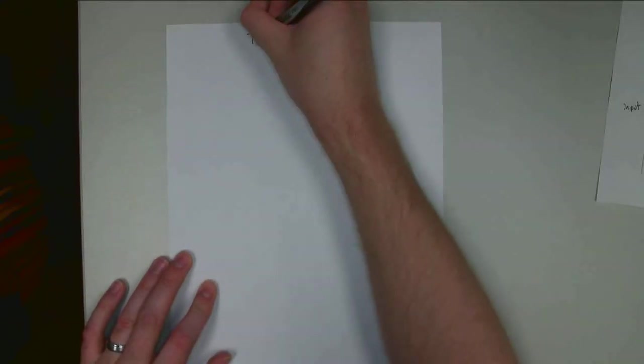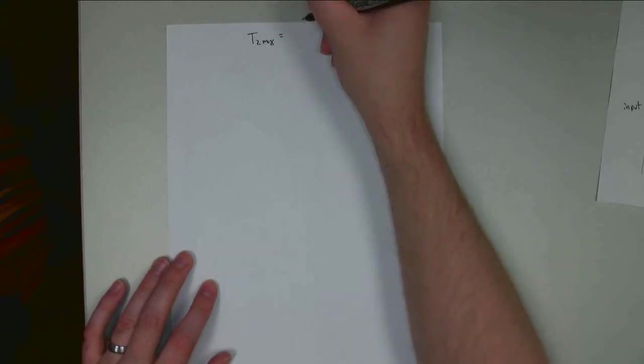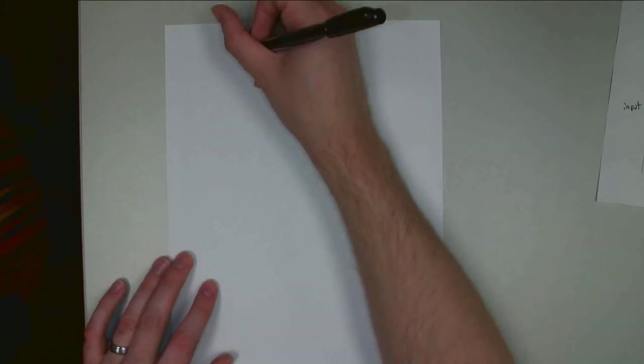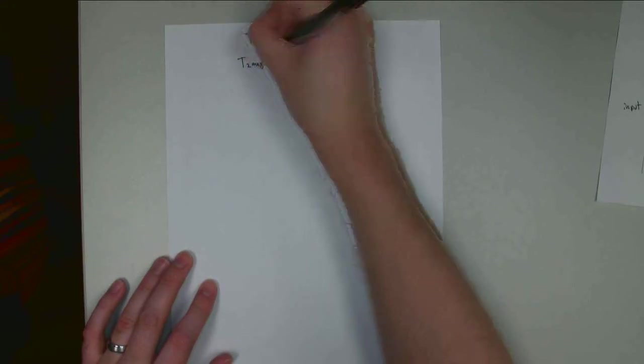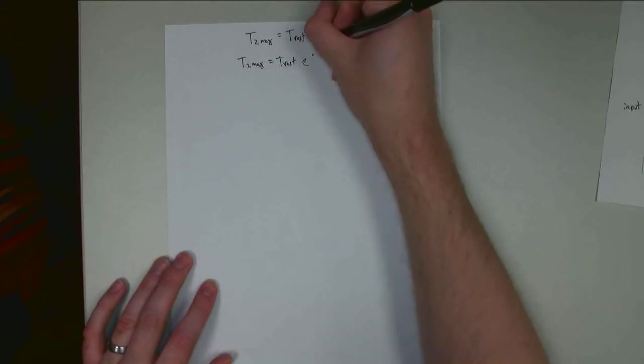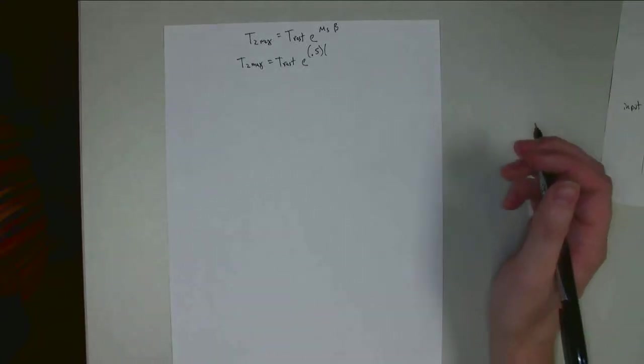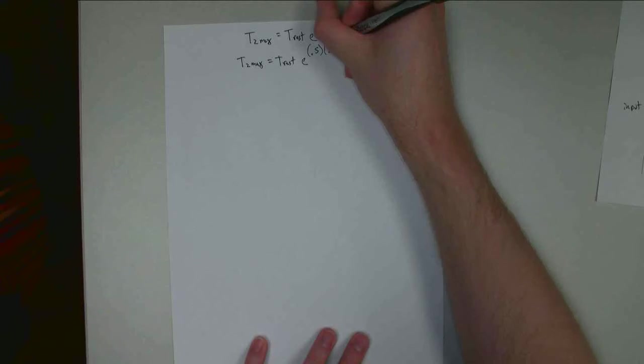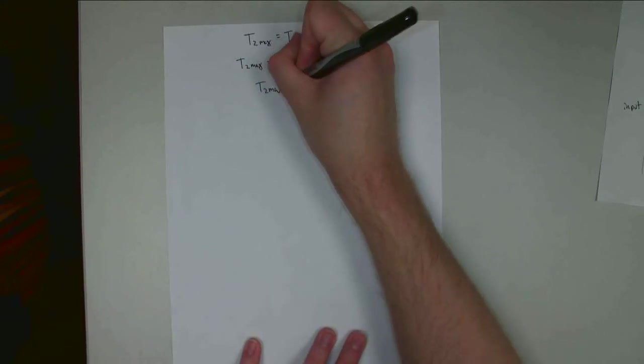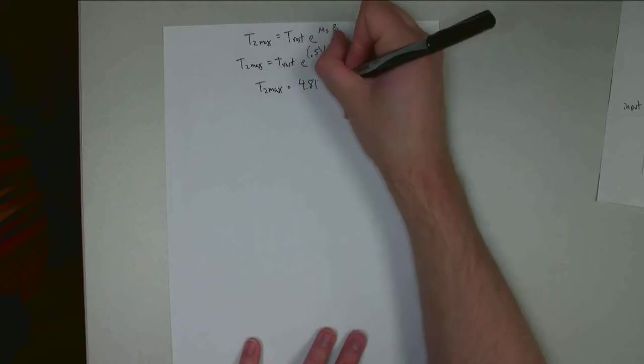Let's go to the usual equation we use when we're solving for belt friction. And that's going to be T2 max, and it's going to be equal to T1, and again, T1 is just the resting tension, times E to the mu static times beta. So T2 max, I don't know that. T rest, I don't know that. Mu static, I know, is .5. And the contact angle is 180 degrees, or pi radians. So with this, I can solve and say that T2 max is going to be equal to 4.81 times the resting tension.